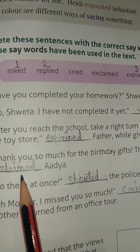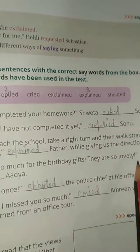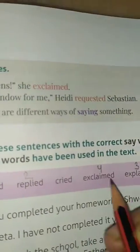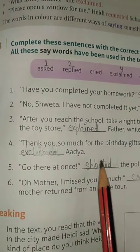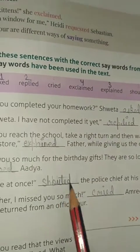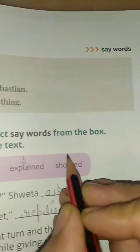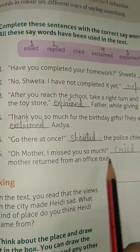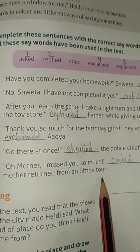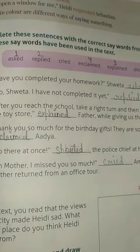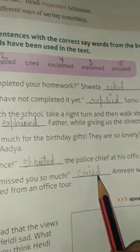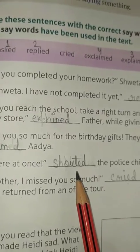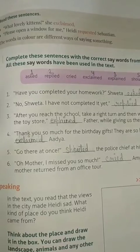'Thank you so much for the birthday gift, they are so lovely' — this is an exclamation, so write 'exclaimed.' 'Now go!' dashed the police chief at his officers — write 'shouted.' 'Oh mother, I miss you so much,' said Amreen when her mother returned — it is natural to cry, so write 'cried.' So: first is asked, second replied, third explained, fourth exclaimed, fifth shouted, and last is cried. Fill this exercise in your book also. Thank you and have a nice day.